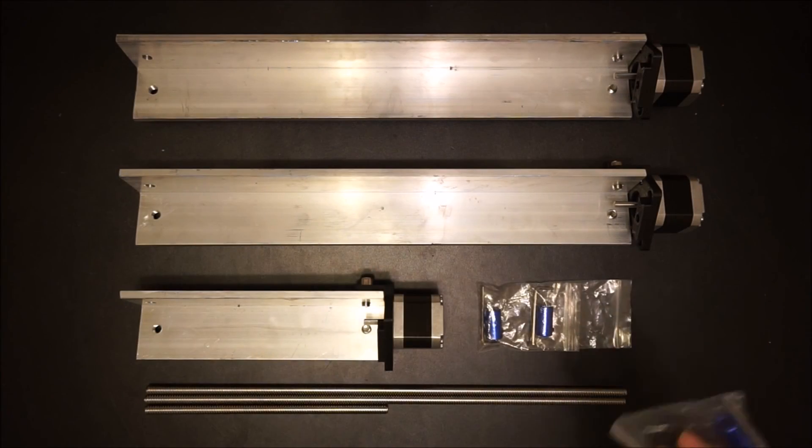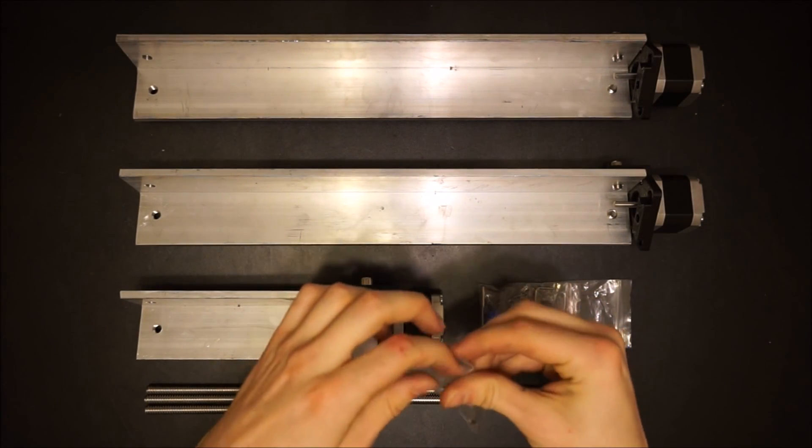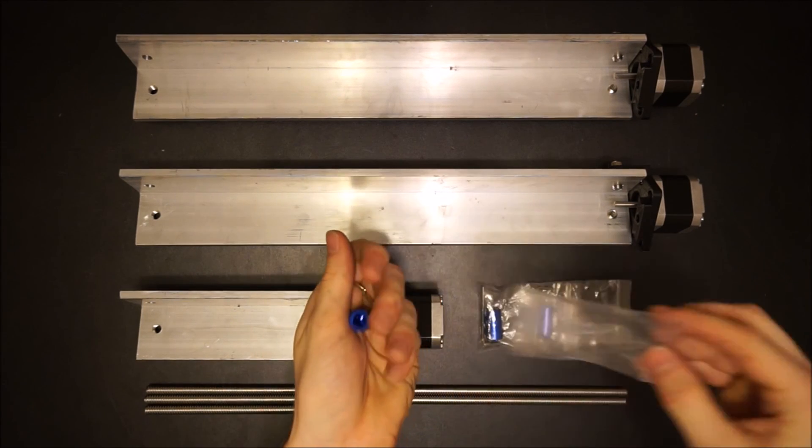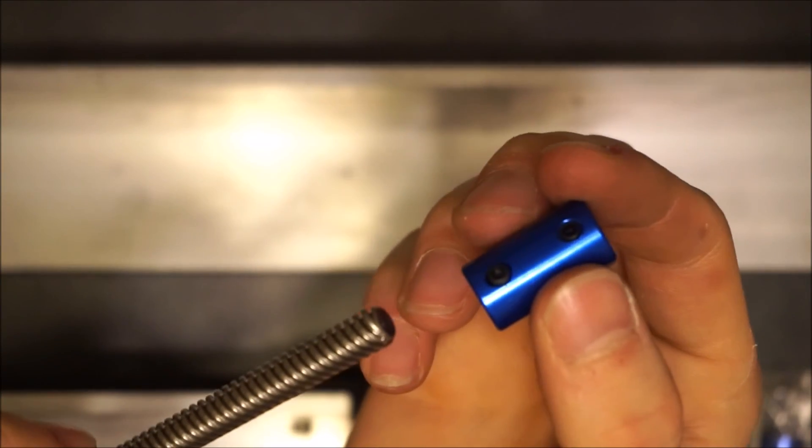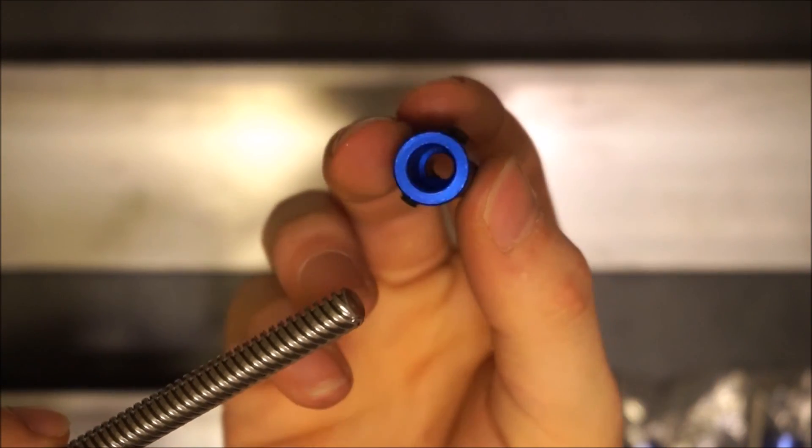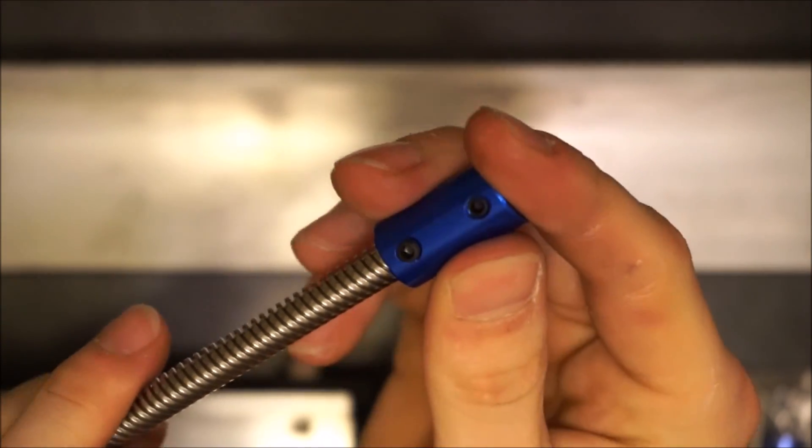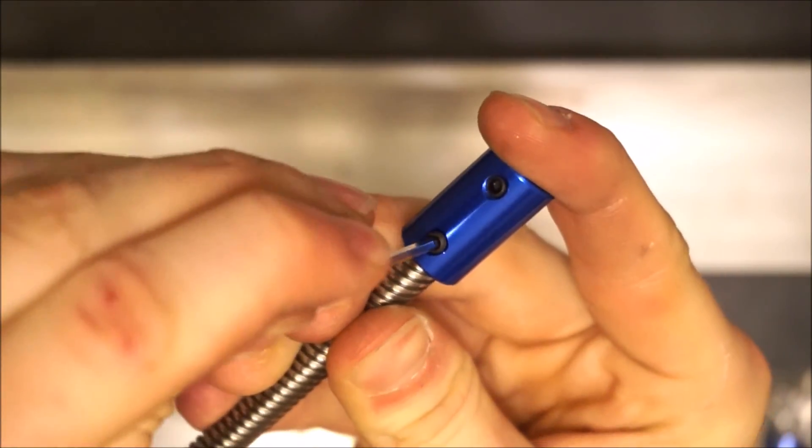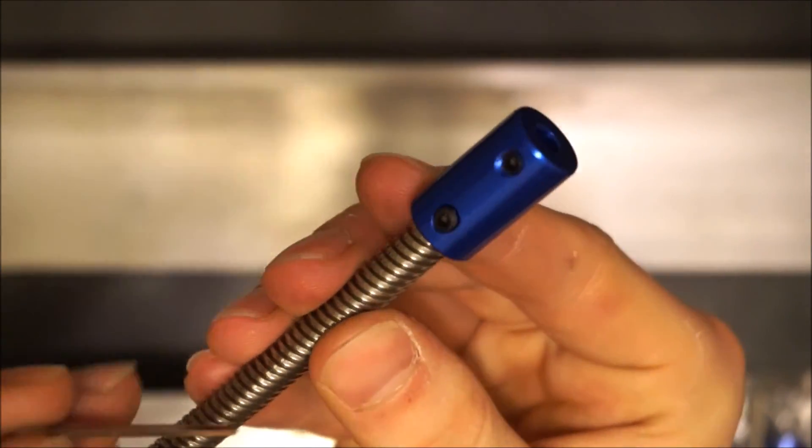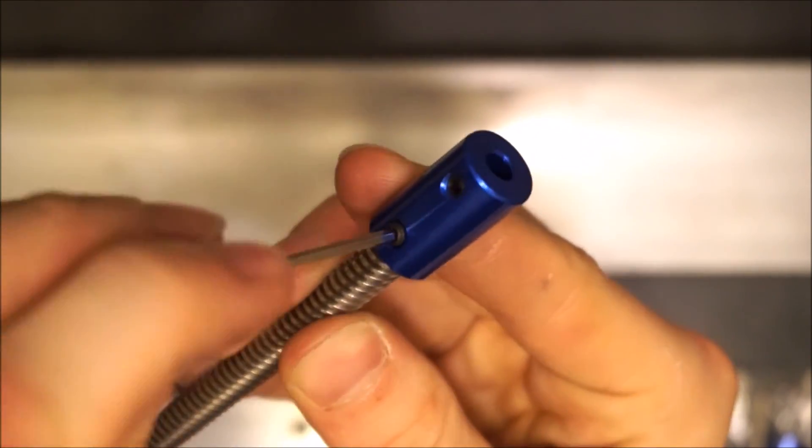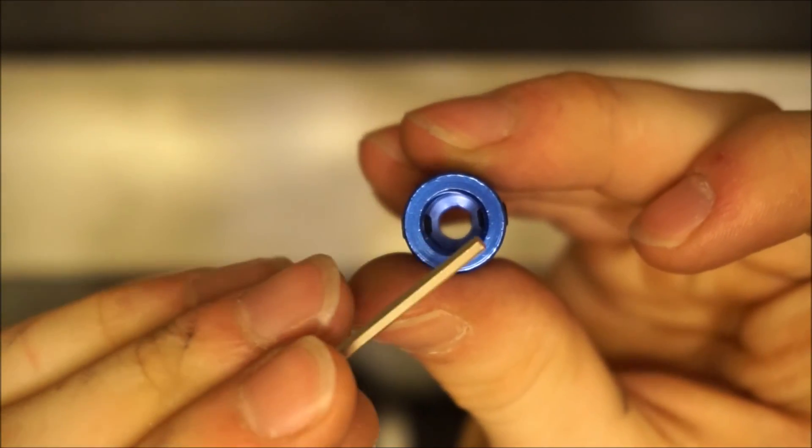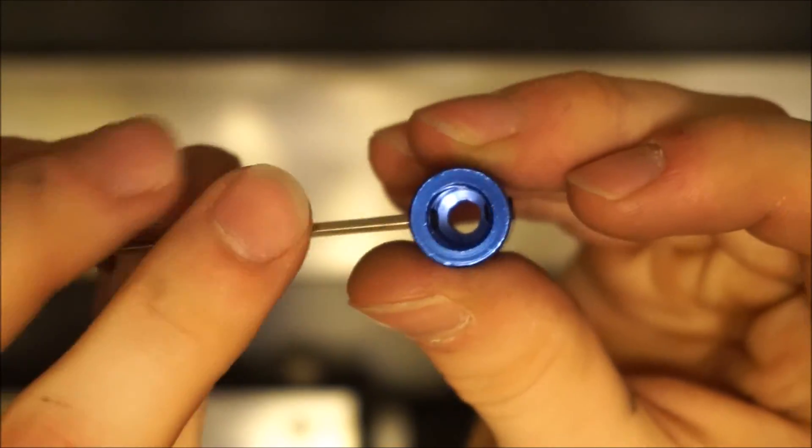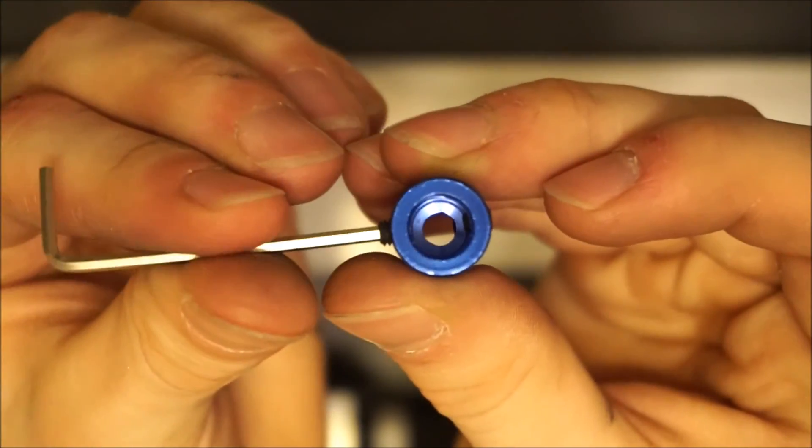You'll now finally attach the gantries to their respective rails. Begin by grabbing the three couplers and attaching a coupler to the end of each of the lead screws. Be sure to firmly press the couplers onto the lead screws until they're on all the way, then secure both set screws. If you notice that the set screws in the coupler are screwed in too far, you'll have to back them off a bit before the lead screw will fit in.